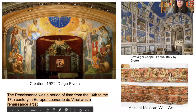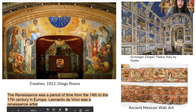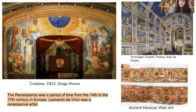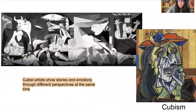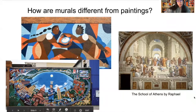Let's take a look at some of Diego Rivera's influences for his murals. On the image on the left, Creation 1922 by Diego Rivera, we see direct ties to Scroveni Chapel made in Padua, Italy by Giotto. The Renaissance was a period of time from the 14th to the 17th century in Europe. Leonardo da Vinci was a Renaissance artist. Diego Rivera was heavily influenced by Renaissance artists and frescoes, as well as ancient Mexican wall art. We also see that he was influenced by Cubist artists, such as Pablo Picasso. Cubist artists show stories and emotions through different perspectives at the same time. Artists throughout history are always influenced by other artists.